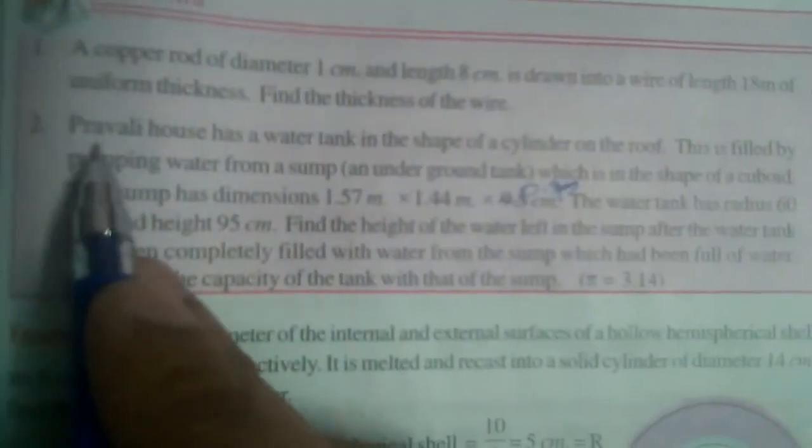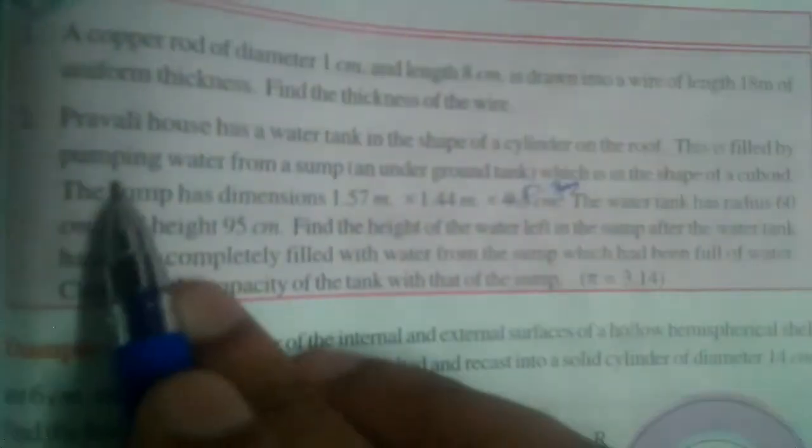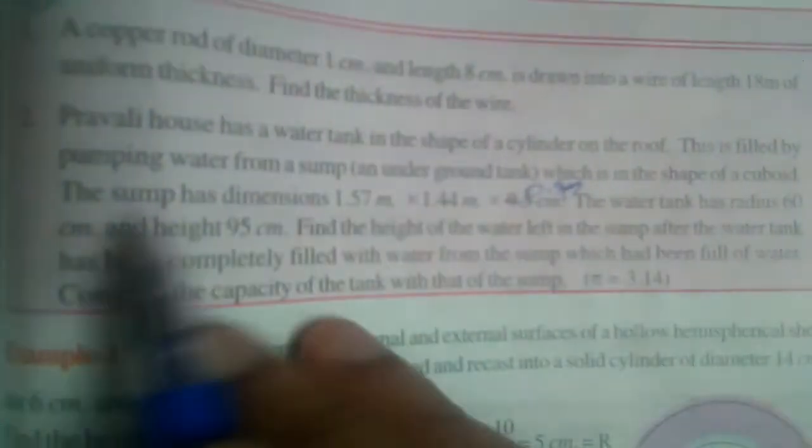We have this question here. Pravalli's house has a water tank in the shape of a cylinder on the roof. This is filled by pumping water from a sump. What is a sump? An underground water tank, which is in the shape of a cuboid.